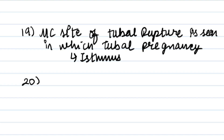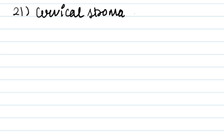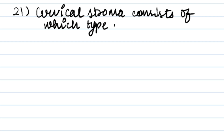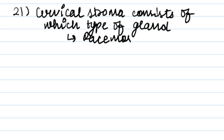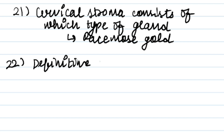Intracytoplasmic sperm injection (ICSI) is done when an infertile male has a sperm count of less than 5 million per milliliter. Next point: cervical stroma consists of smooth muscle glands — write your answer in the comment box; the answer is fibromuscular. The definitive treatment of adenomyosis is hysterectomy.